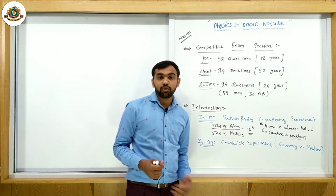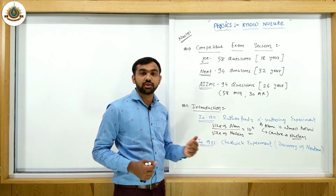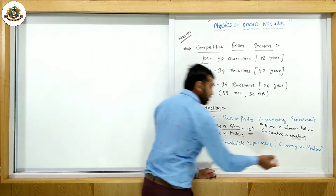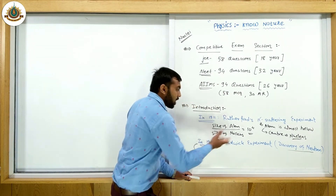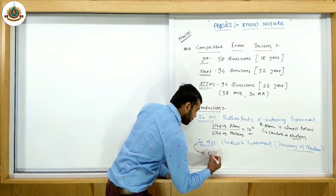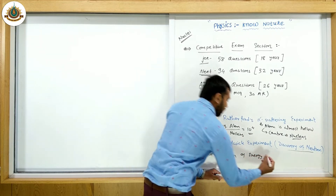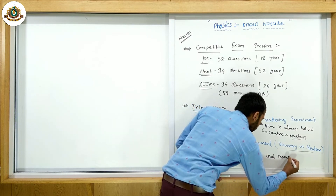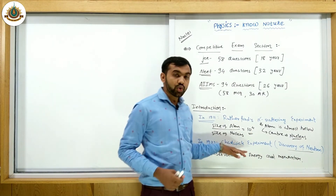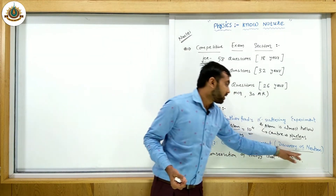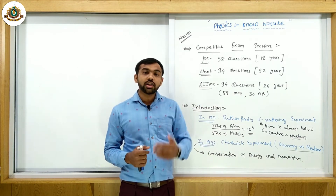In 1932, Chadwick performed some experiments, and as a result, a new particle inside the nucleus was discovered — the neutron. Using conservation of energy and momentum, Chadwick found this new particle inside the nucleus. After this experiment, it became known that the nucleus contains two particles: the proton and the neutron.